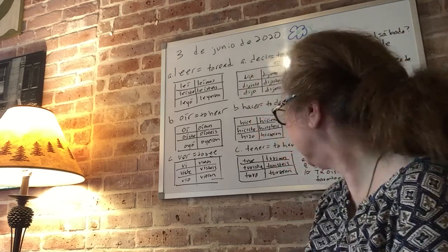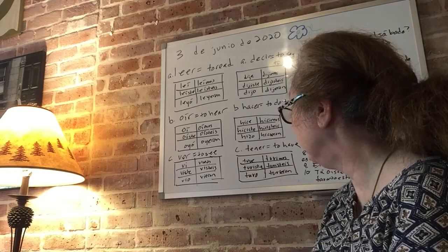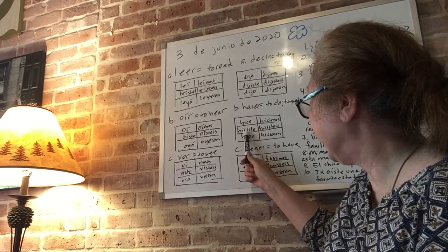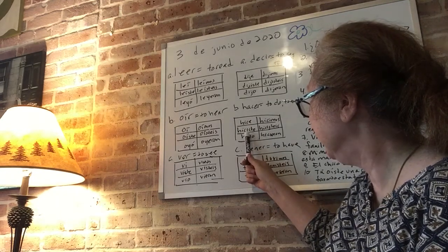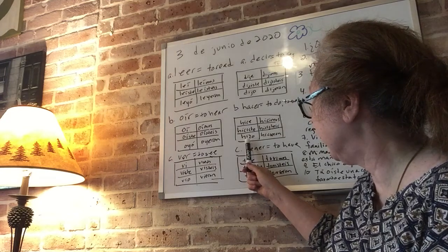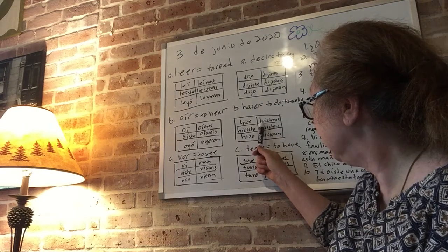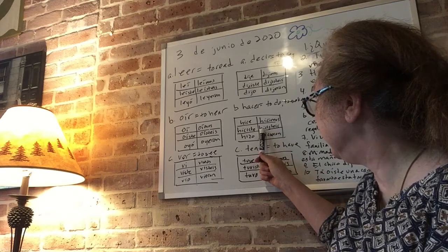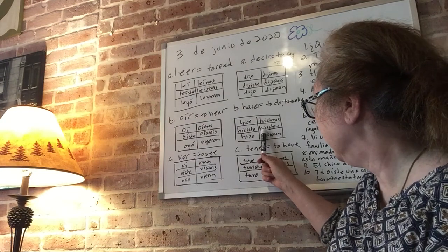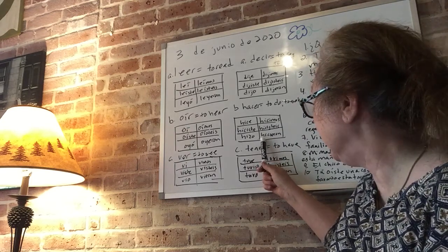Hacer means to make or to do. Yo hice, H-I-C-E, no accent. Tú hiciste, H-I-C-I-S-T-E. Él, ella, usted hizo, H-I-Z-O. Nosotros hicimos, H-I-C-I-M-O-S. Vosotros, vosotras hicisteis, H-I-C-I-S-T-E-I-S, no accent. Ellos, ellas, ustedes hicieron, H-I-C-I-E-R-O-N.